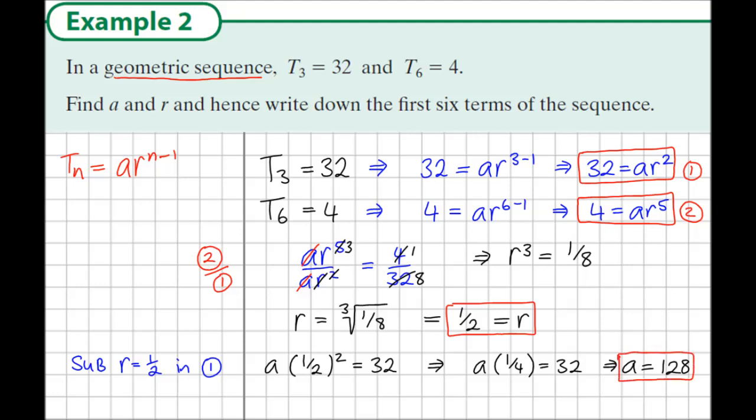And each next term is derived by multiplying the previous term by 1/2. So let's write down the first six terms of the sequence. Now the sequence begins with the first term a, so I know that a = 128. If I multiply this by 1/2, I get 64. Multiply this by 1/2, 32,